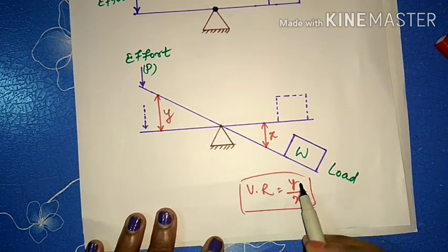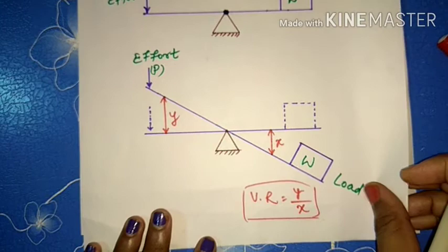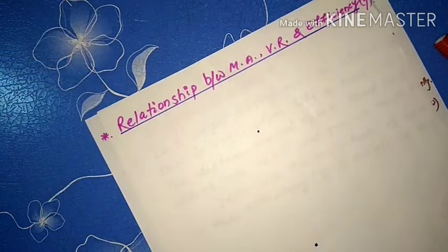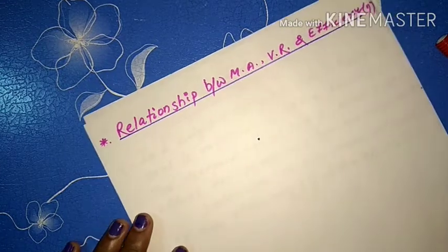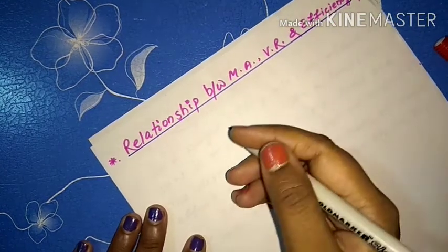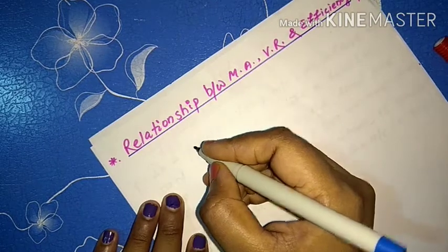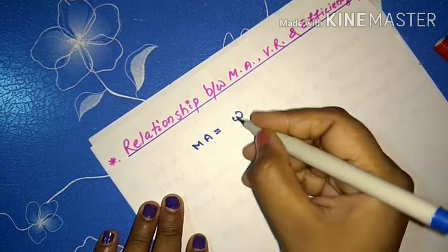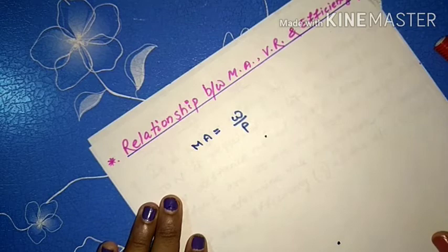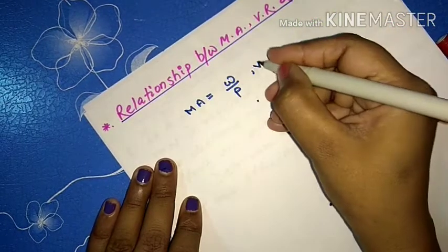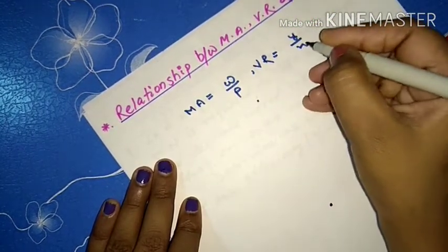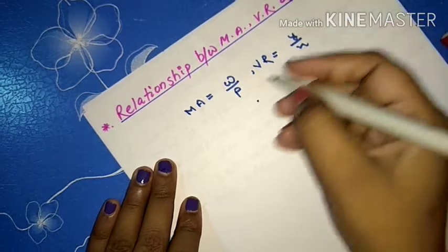So velocity ratio (VR) equals y divided by x. Now we need to find the relationship between mechanical advantage, velocity ratio, and efficiency. We know that mechanical advantage equals W divided by P, and velocity ratio equals y divided by x, as I have just explained.